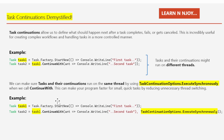Let's understand with an example how we use TaskContinuationOptions.ExecuteSynchronously with ContinueWith. We again have two tasks: Task 1 prints 'first task' using task.Factory.StartNew with a lambda expression. Then Task 2 is defined using task1.ContinueWith, where the first argument is the antecedent lambda printing 'second task', and the second argument is TaskContinuationOptions.ExecuteSynchronously — ensuring Task 1 and Task 2 run on the same thread, reducing unnecessary thread switching and improving performance.